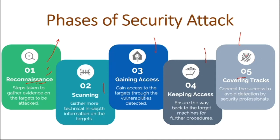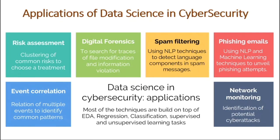We have to protect all network devices from these types of attacks. The applications of machine learning and data science in cybersecurity include: Risk Assessment — we can cluster devices by exposure risk using ML algorithms. Digital Forensics — searching for traces and fingerprints in file modifications. Spam Filtering — using machine learning and deep learning with NLP to read emails and detect spam. Phishing Emails — using NLP and ML to identify suspicious words indicating phishing attempts. Event Correlation — clustering similar events to identify common attack patterns.